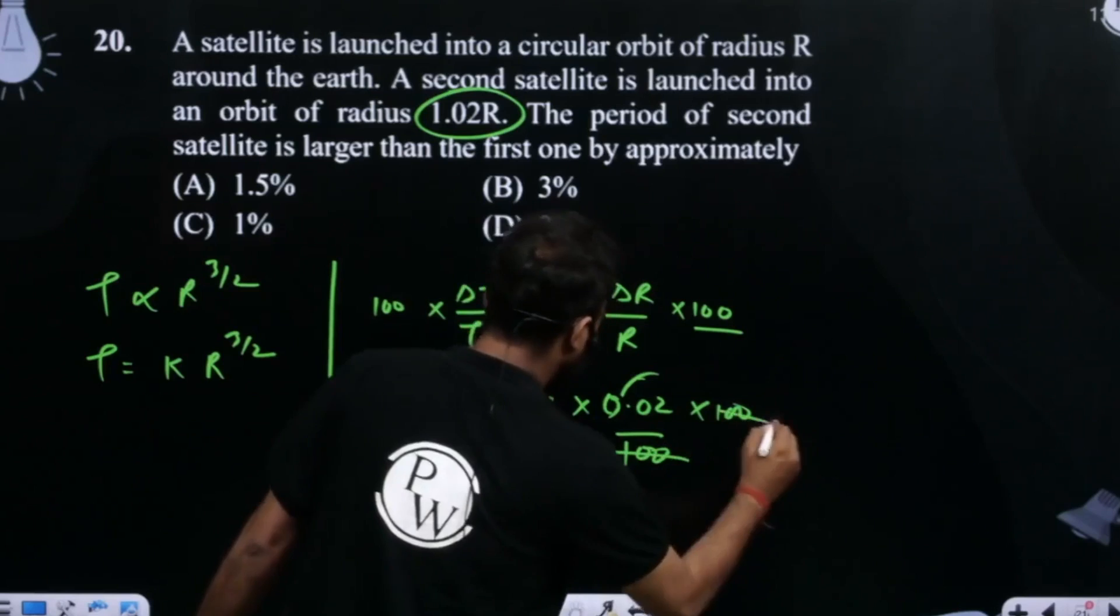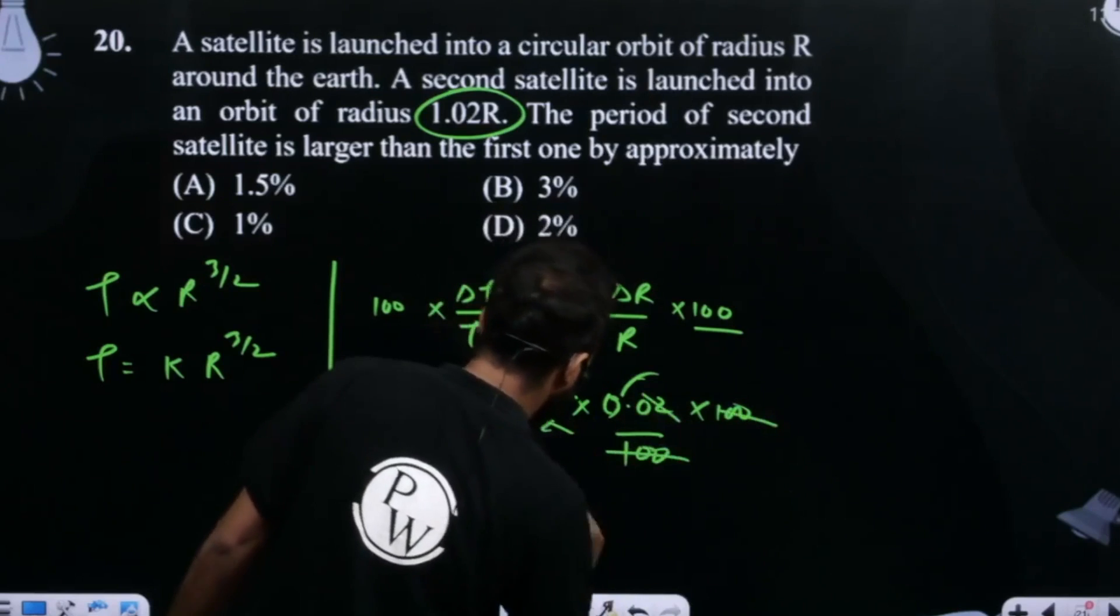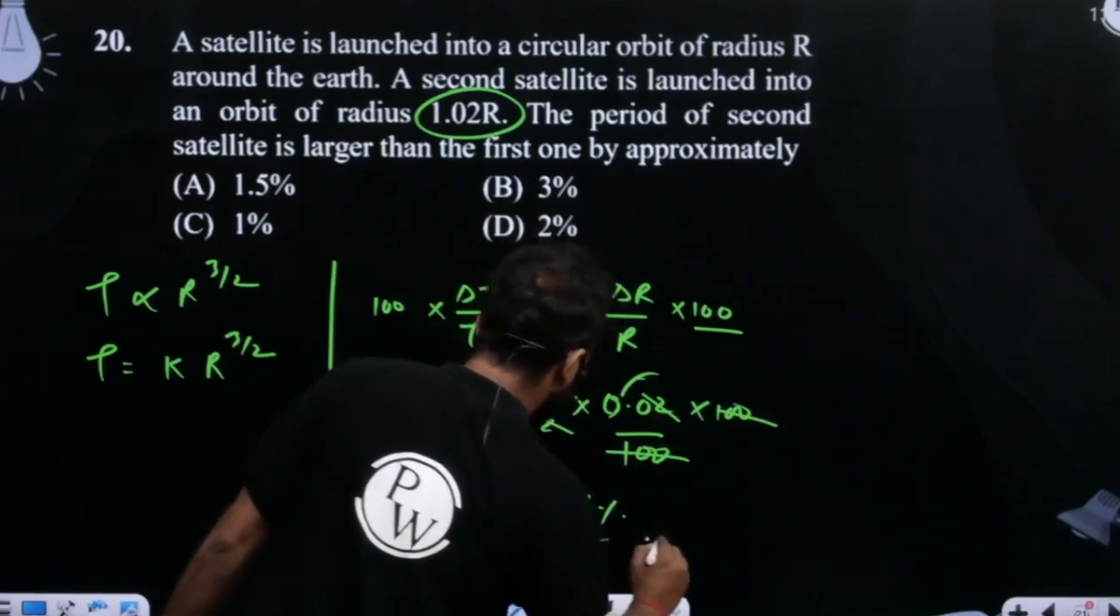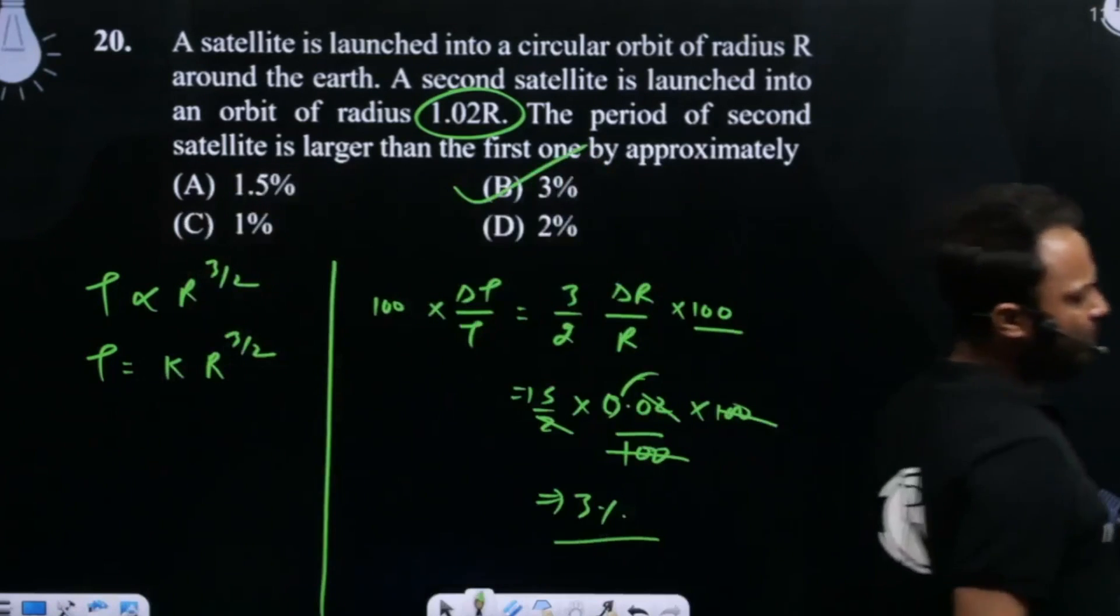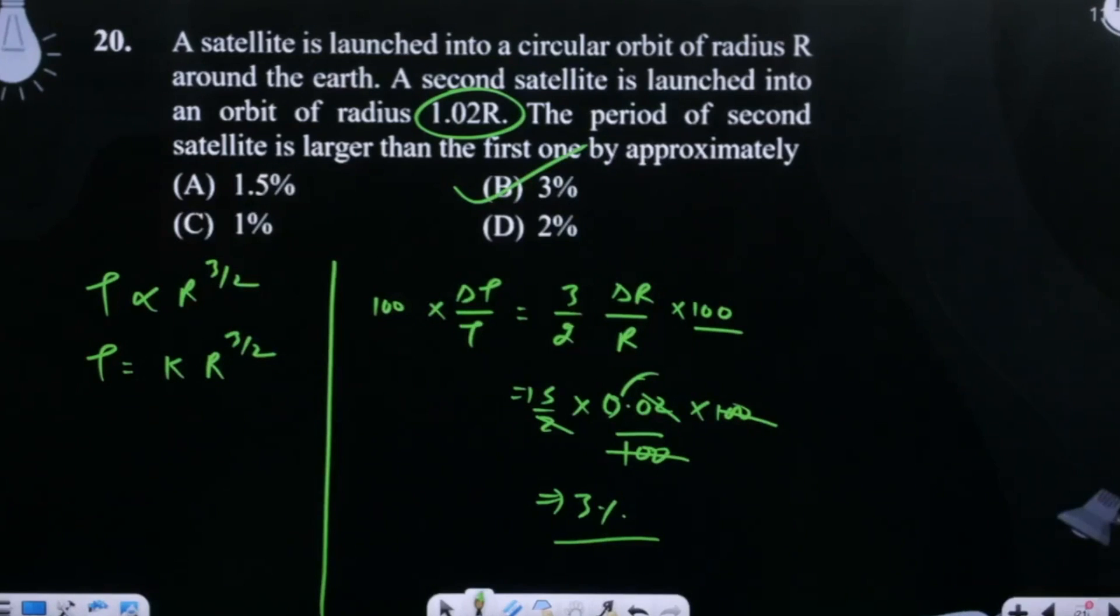If I will take here, 20 and 20 will get cancel out, 2 and 2 will get cancel out, so the change in time period will be 3% only, which is option number B. This should be our correct answer.